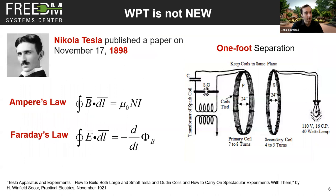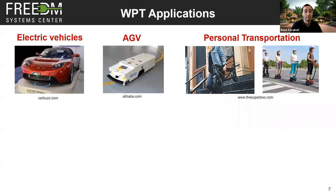Wireless power transfer is not new. Nikola Tesla published a paper in 1898 discussing the idea, and on the right-hand side you see a paper published in 1921 showing wireless power transfer with two coils having one-foot separation. WPT is based on fundamental electromagnetic equations — Ampere's law and Faraday's law — and has found many applications in electric vehicles, automated guided vehicles, and personal transportation like electric scooters.